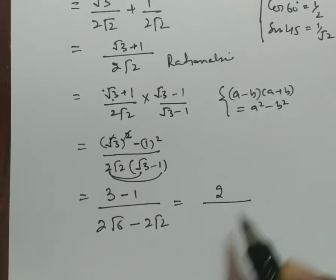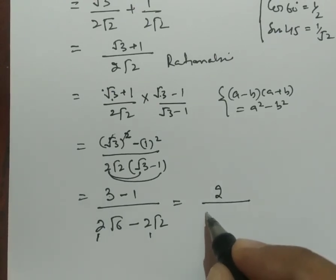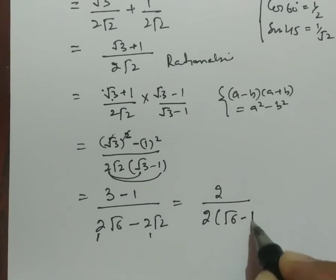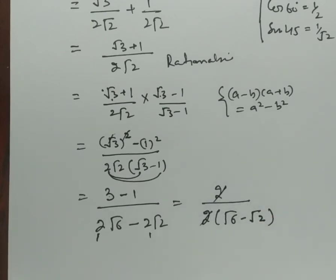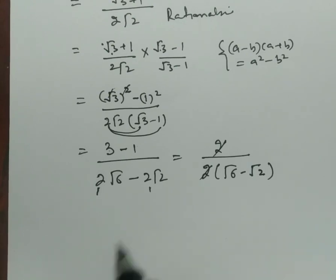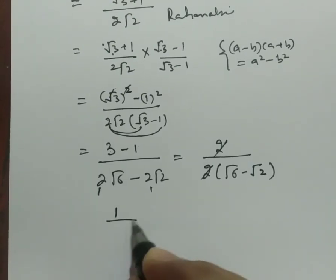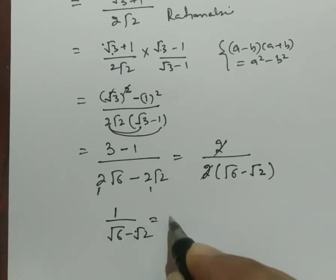Take out the 2 common from both, so 2 root 6 minus root 2. So 2s cancel each other. Therefore, the final solution is 1 over root 6 minus root 2. This is the solution.